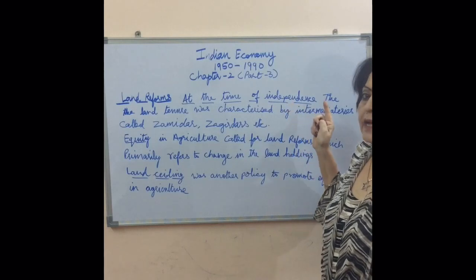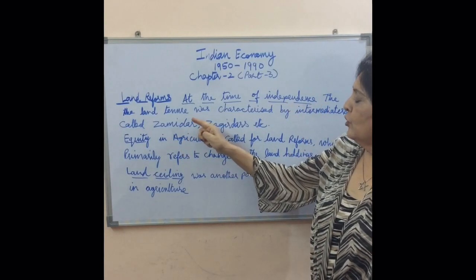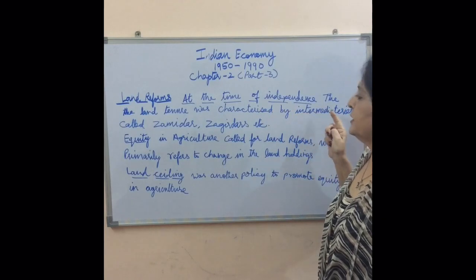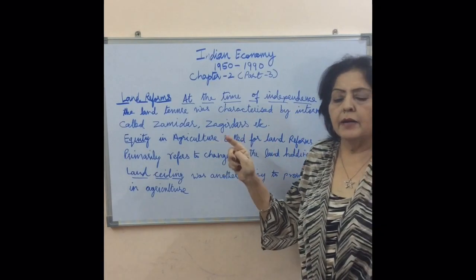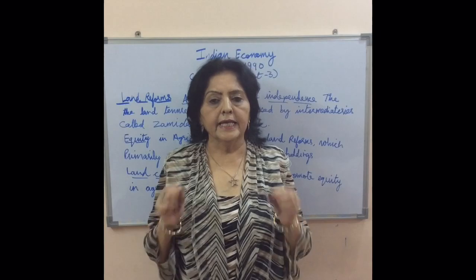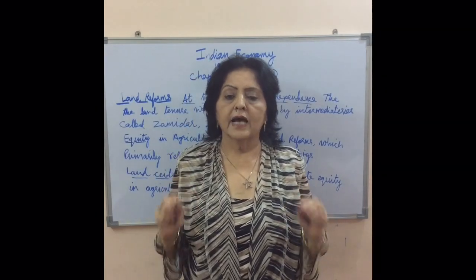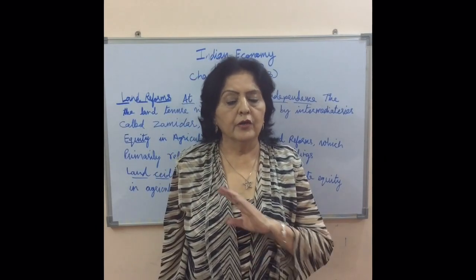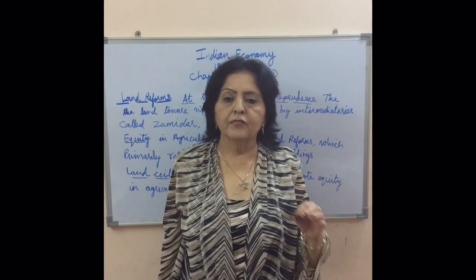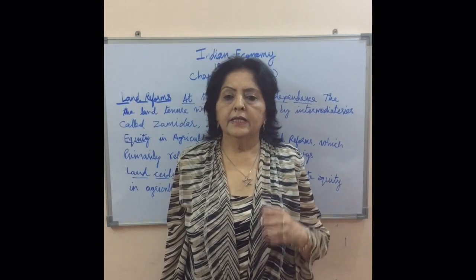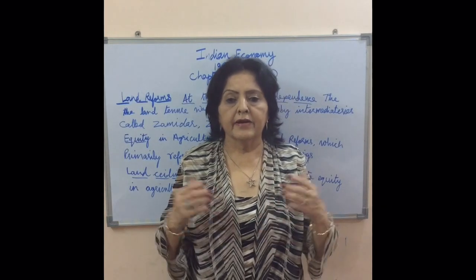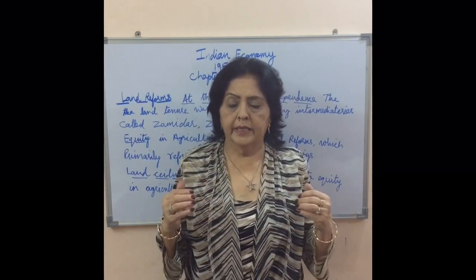At the time of independence, the land tenure was characterized by intermediaries called zamindars and jagirdars. These zamindars and jagirdars were not interested in the condition of the tenants. They were just interested in collecting revenue and making money.